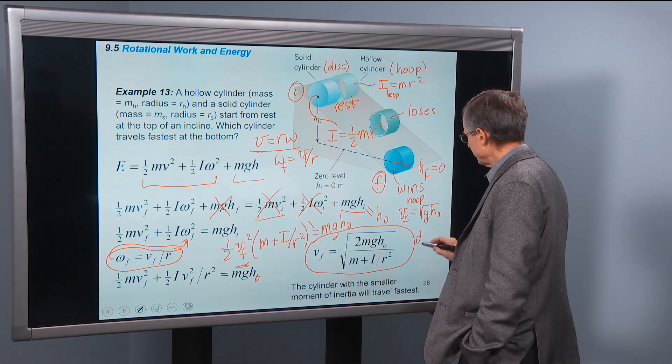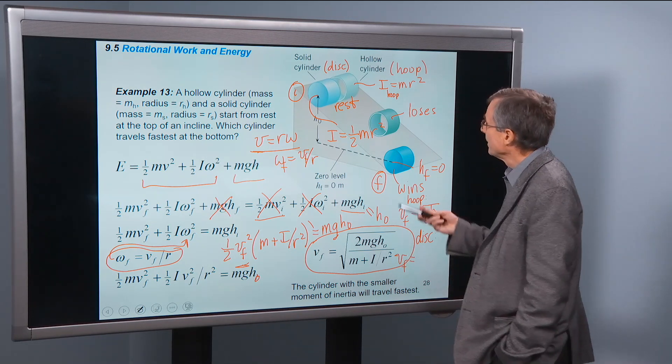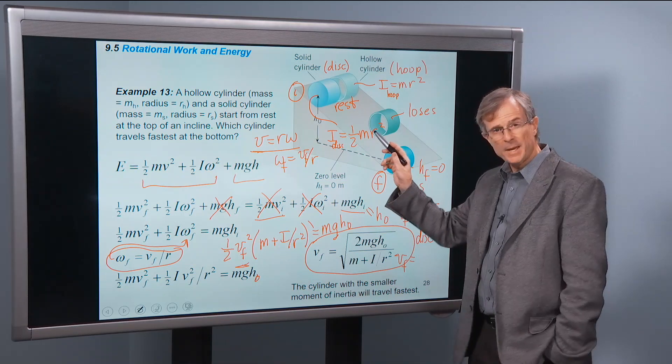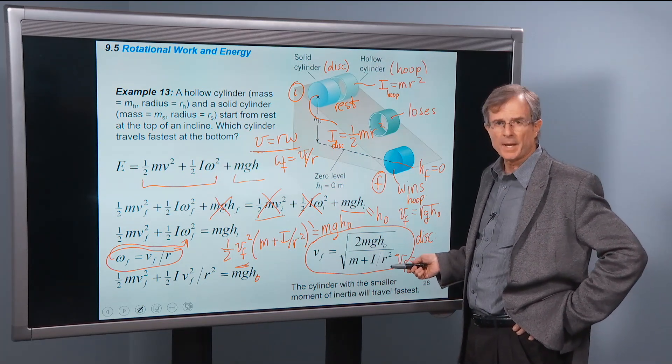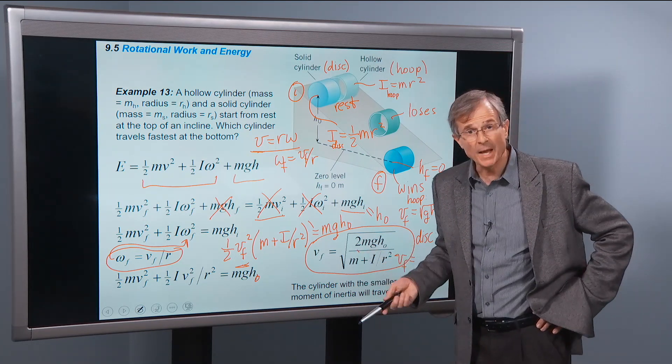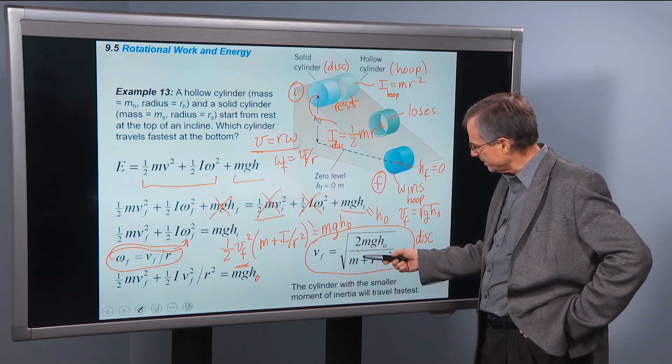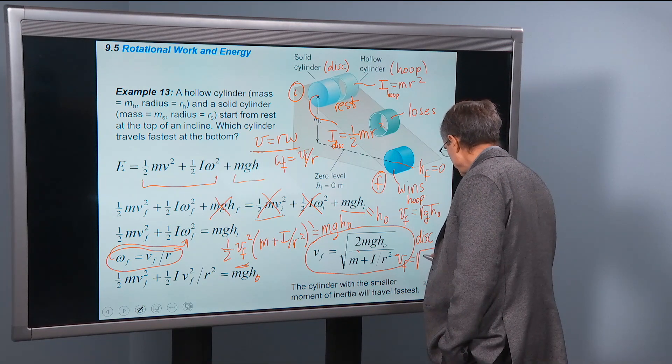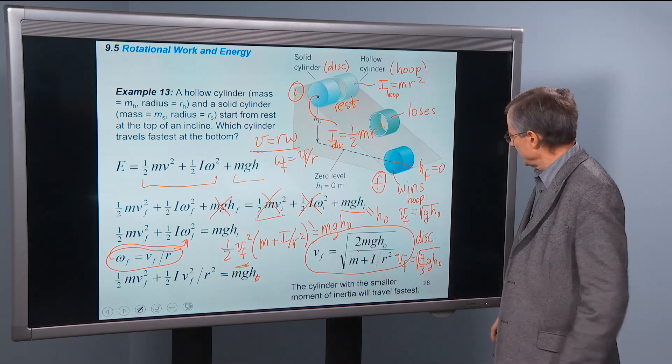For the disc, the final velocity, we're going to have to put this moment of inertia in for the disc. 1/2 mr². And we're going to put that into this equation. What do we get? 1/2 mr² divided by r² is just 1/2 m for this bottom term here. Plus m, m plus 1/2 m is 3/2 m. But the m's cancel. So we have 2 divided by 3/2. That's the same as 2 times 2 divided by 3. That's 4/3.